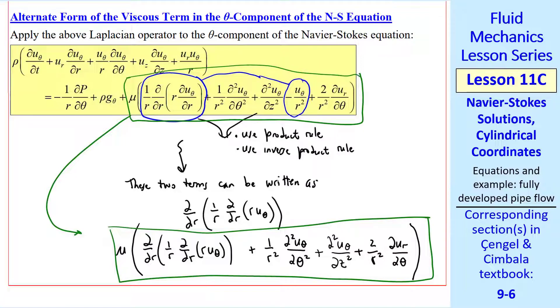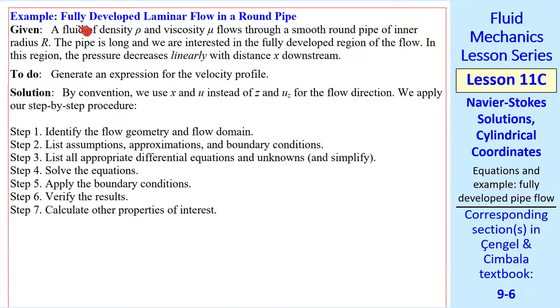Why would we do this? Well, it turns out in some problems it's easier to use this form of the equation than this form. And in some problems it's better to use this form. So you take your pick, depending on the problem you're solving. Now we're ready to do an example problem in cylindrical coordinates. We'll do fully developed laminar flow in a round pipe. We've talked about this many times already. And now we'll generate an expression for the velocity profile. We'll be able to do this analytically.